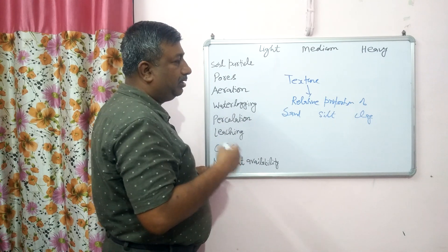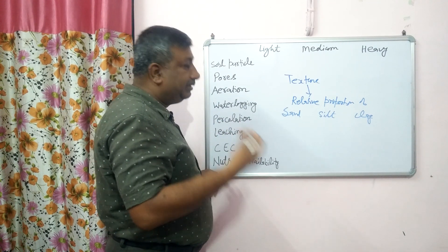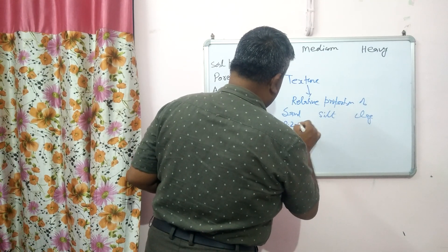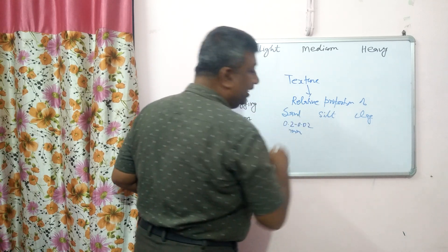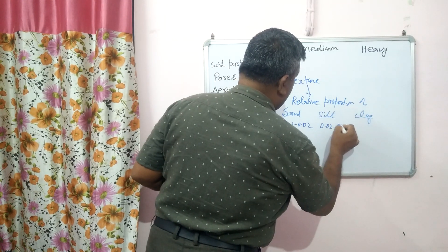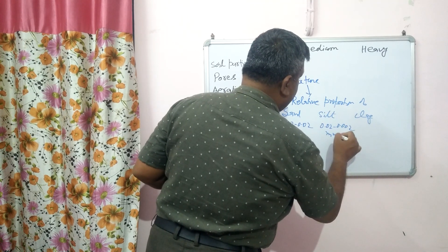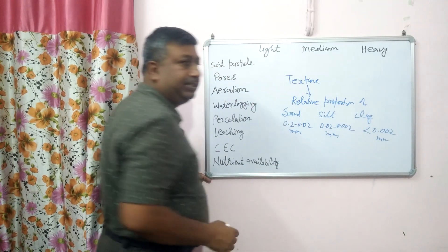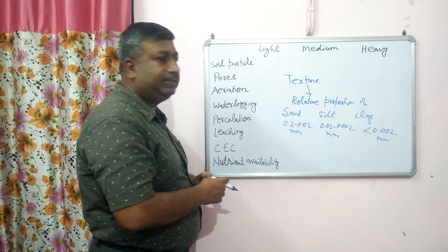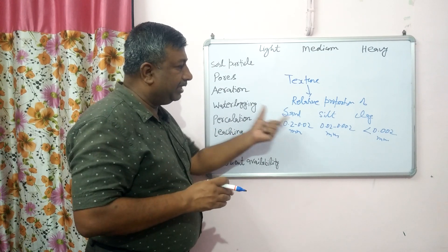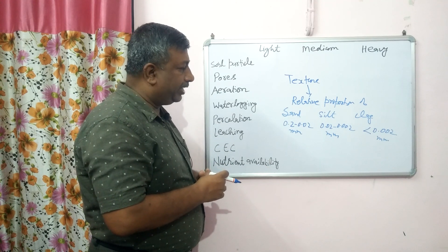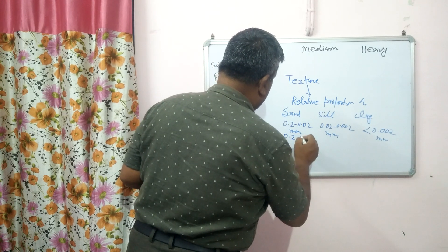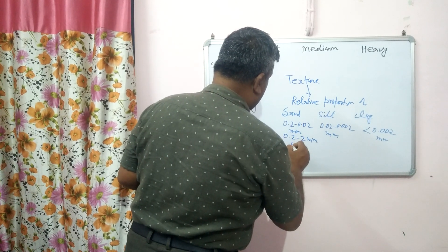If clay proportion is more then it is called clay soil; if sand proportion is more then it is called sandy soil. The particle size of fine sand is about 0.02 to 0.2 mm, silt is 0.002 to 0.02 mm, and less than 0.002 mm particle size is called clay. The coarse sand is about 0.2 to 2 mm.